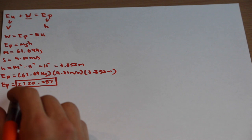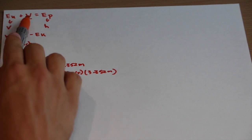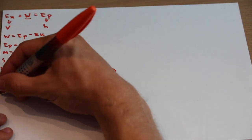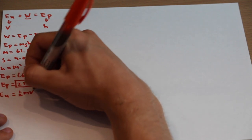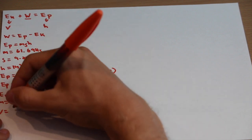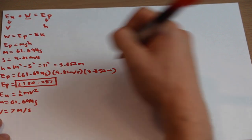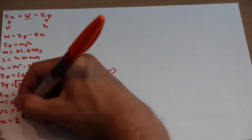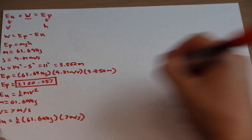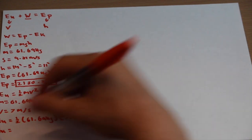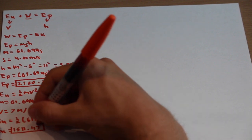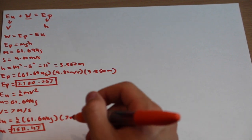Now let's solve for the kinetic energy, which equals one-half mv squared. Again, mass is 61.69 kilograms and velocity is 7 meters per second. Kinetic energy equals one-half times 61.69 kilograms times (7 m/s)² — that's going to equal 1,511.4 joules of energy. That's already a lot of the energy — you can see that's 70% already.